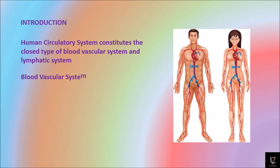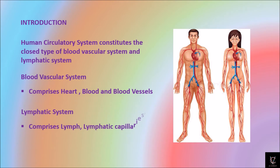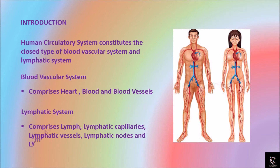The blood vascular system comprises the heart, blood, and blood vessels. The lymphatic system comprises lymph, lymphatic capillaries, lymphatic vessels, lymphatic nodes, and lymphatic ducts.